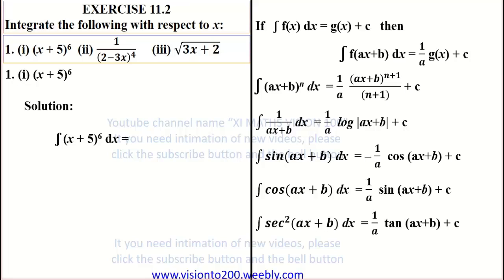The formula is: integral of (AX plus B) whole power N DX is equal to 1 by A into (AX plus B) whole power N plus 1, divided by N plus 1, plus C.